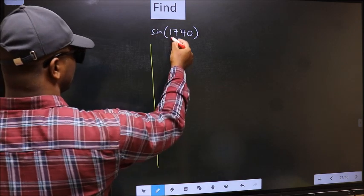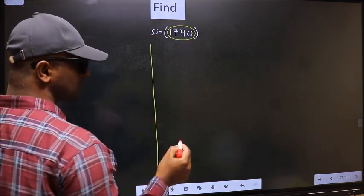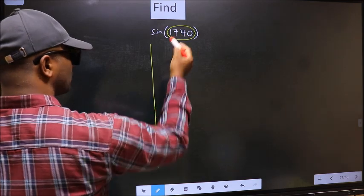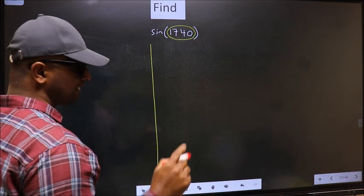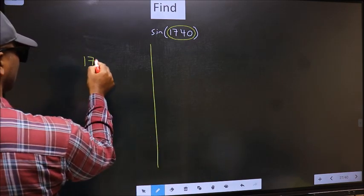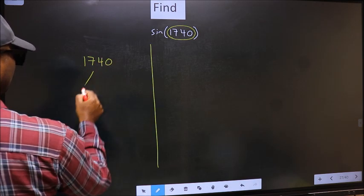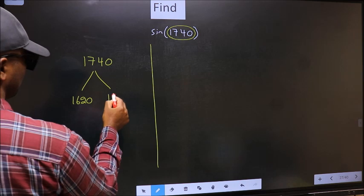Here we have 1740. Now you should check 1740 lies between which two multiples of 180. What I mean is 1740 lies between 1620 and 1800.